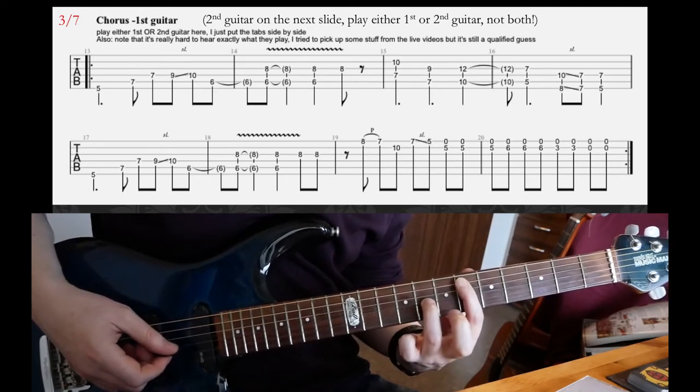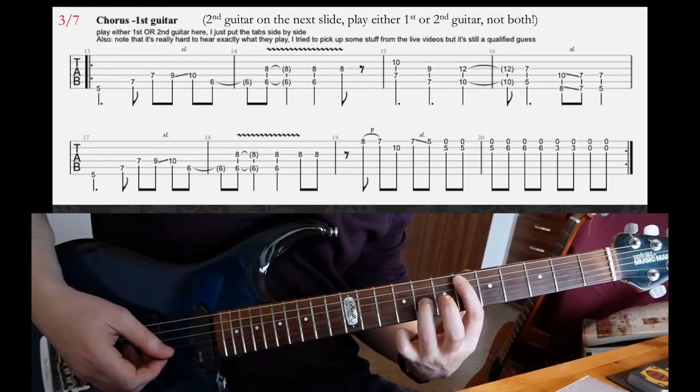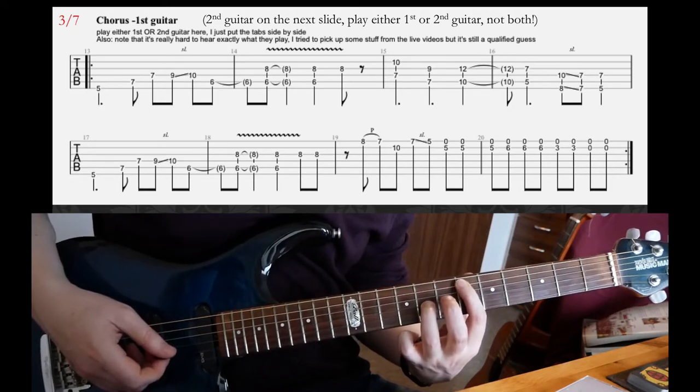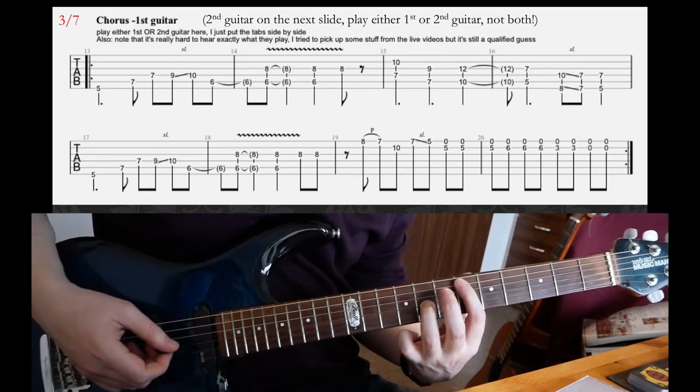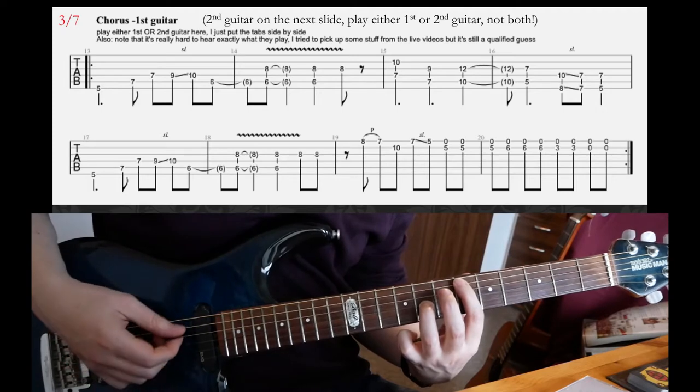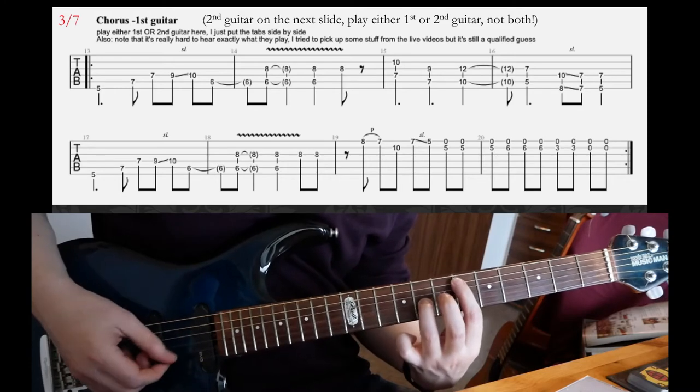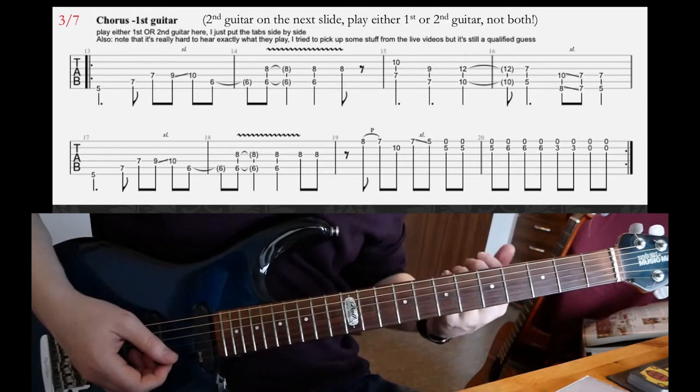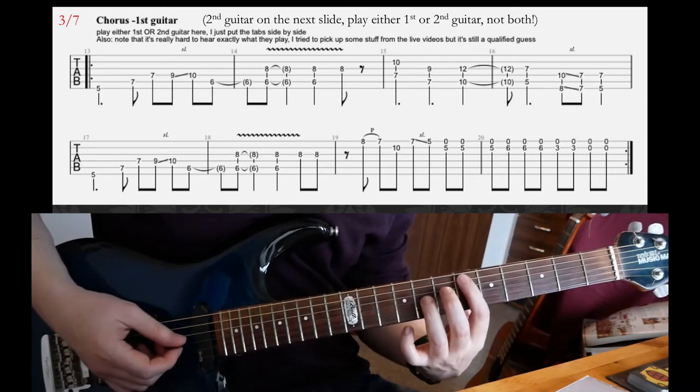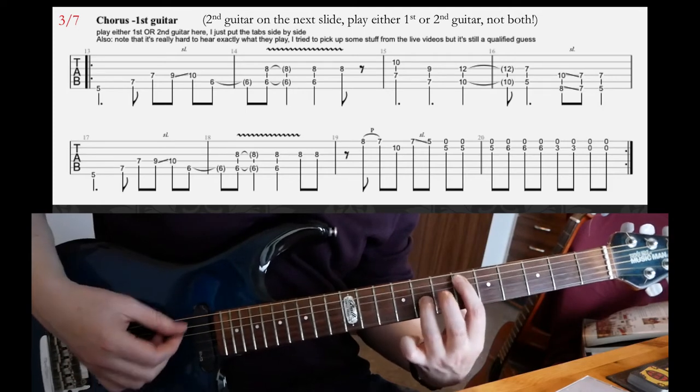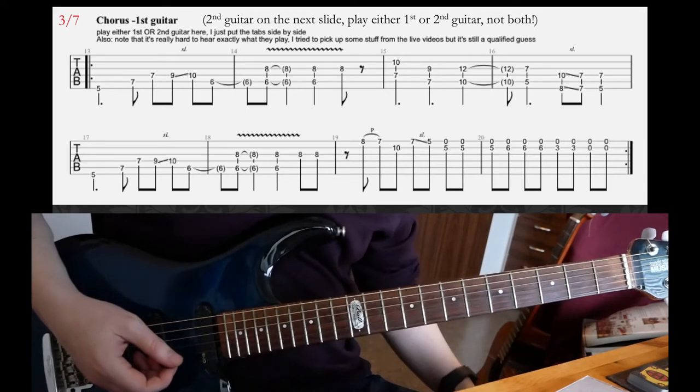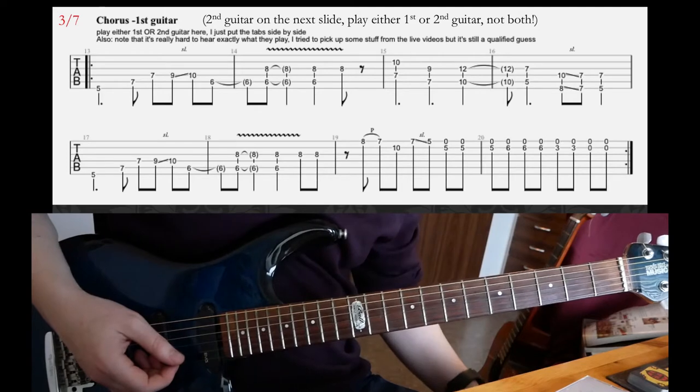Then go back to 6th fret on A with your index finger. Then hold this octave shape, 6 on A and 8th on G. Mute the other strings. I think he has played something like that. Let's try to add some vibrato to this octave.